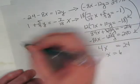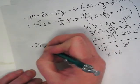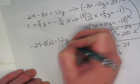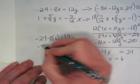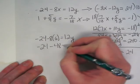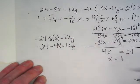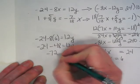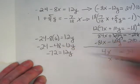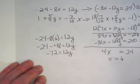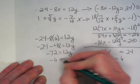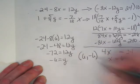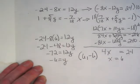Negative 24 minus 8 times 6 equals 12y. That becomes negative 24 minus 48 equals 12y. These two combined get me negative 72 equals 12y. If I divide both sides by 12, I get negative 6 equals y. So, my x-y pair is 6 comma negative 6. After all that work.